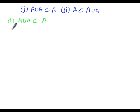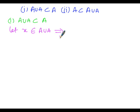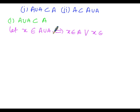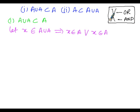To prove the first condition, A union A is a subset of A, we suppose an element x which belongs to the left-hand side, that is A union A. That implies x belongs to A union A, which means x belongs to A or x belongs to A — using the symbol ∨ which indicates 'or' and ∧ which indicates 'and'.